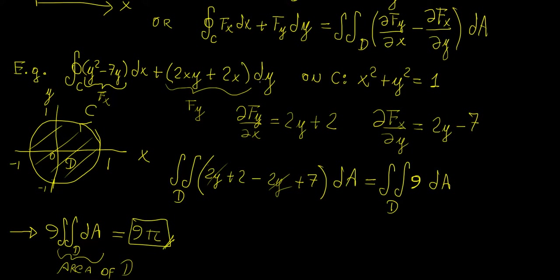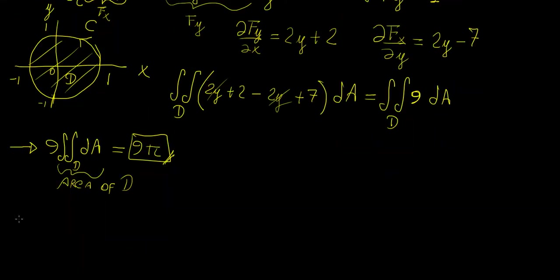We just saw that we evaluated this line integral very easily simply by using Green's theorem — it turned out to be just 9 times π. We only needed probably two steps to arrive at the answer. Now how do we know this is correct? We could try to integrate using the conventional method, and to do that we need to choose a position vector that parametrizes C. Because we're dealing with polar coordinates, we're going to choose x equals cosine of t and y equals sine of t, since the radius of the circle is 1.